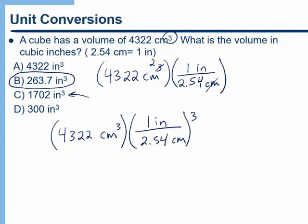Or another way to say that is we could take 4,322 centimeters cubed and then we could take our conversion factor and cube that. So now we would have inches cubed and centimeters cubed in our conversion factor. Mathematically that means we're just taking that 4,322 and dividing by 2.54 three times or the cube of 2.54. If you do that you should get 263.7 inches cubed.